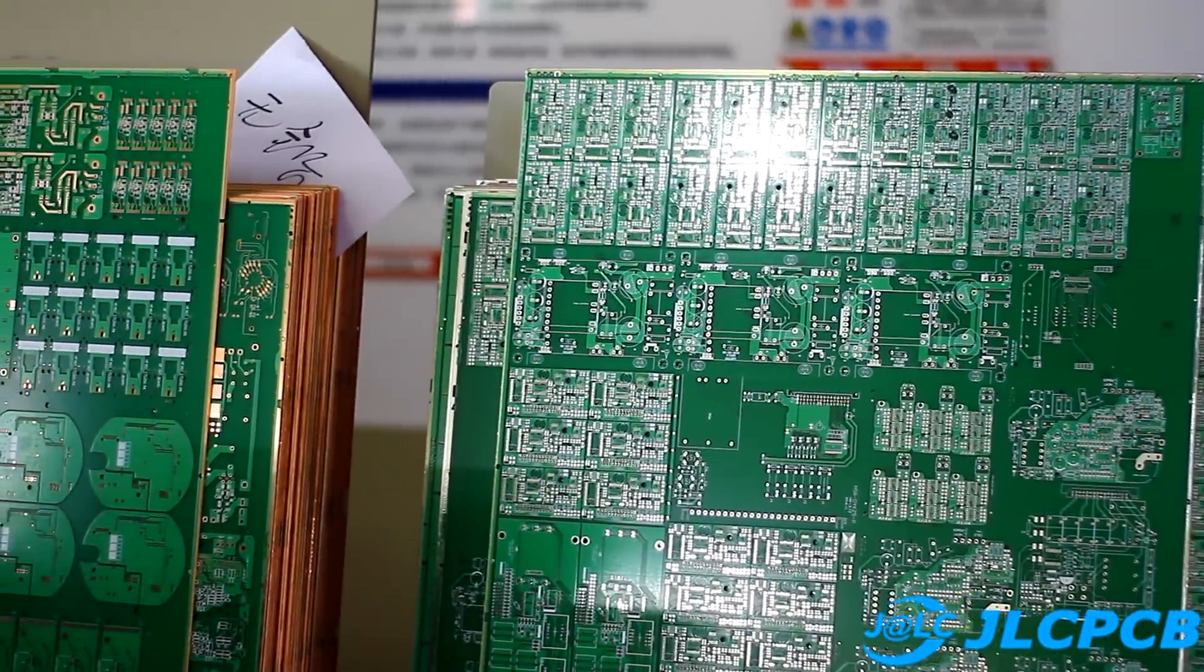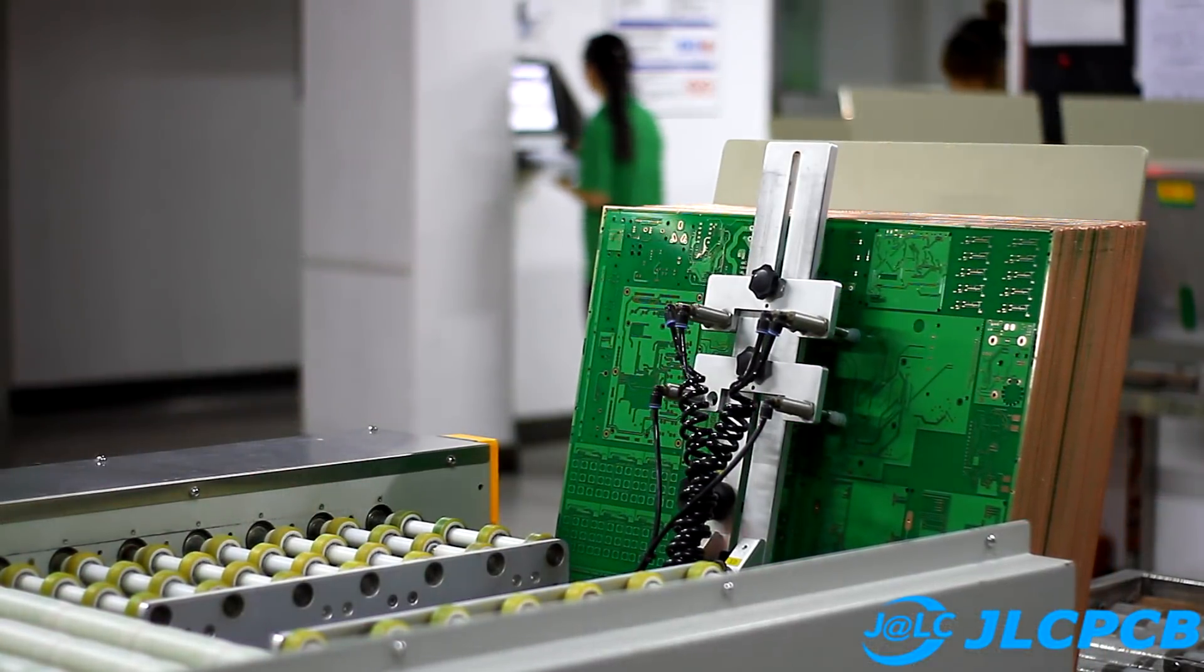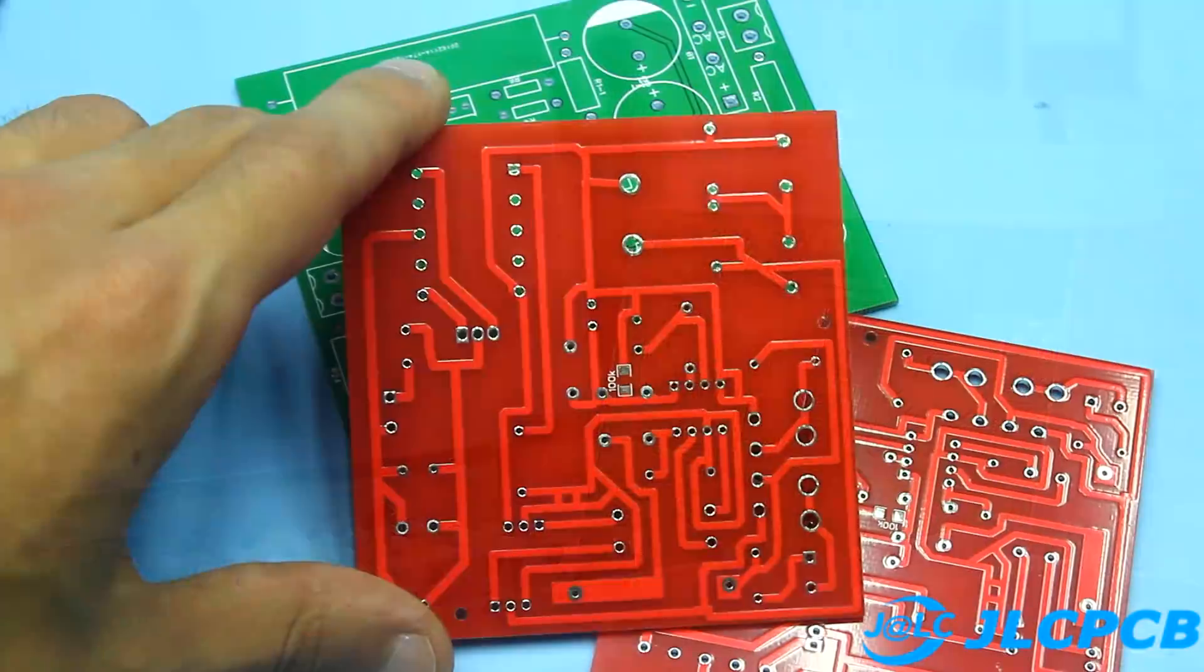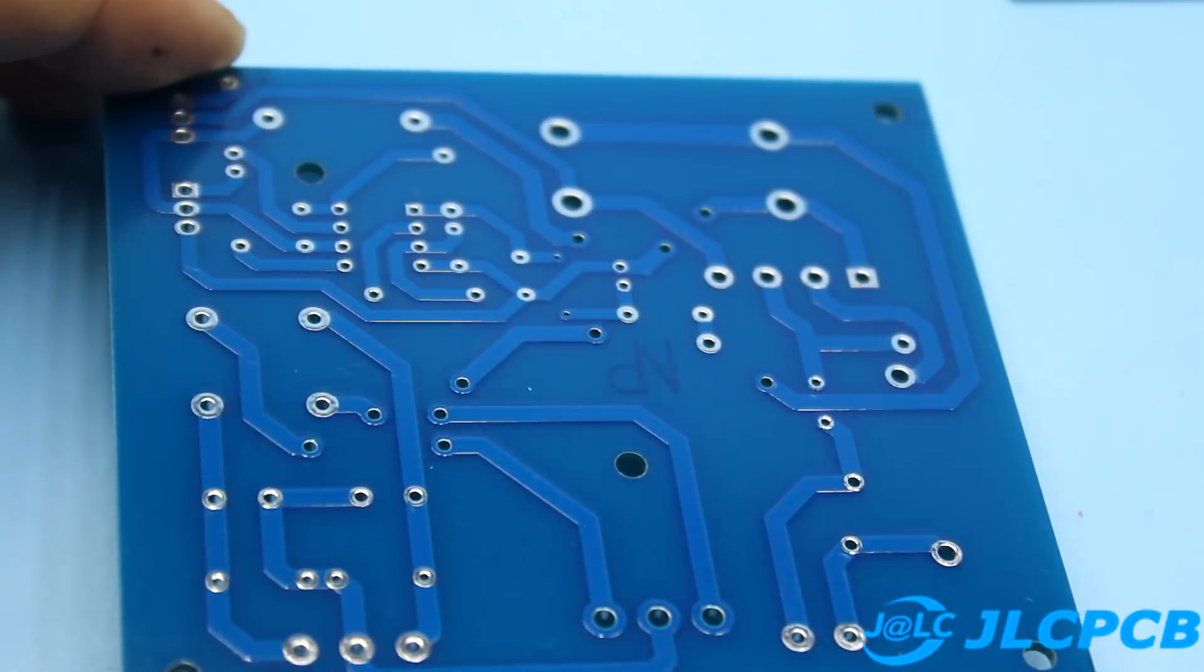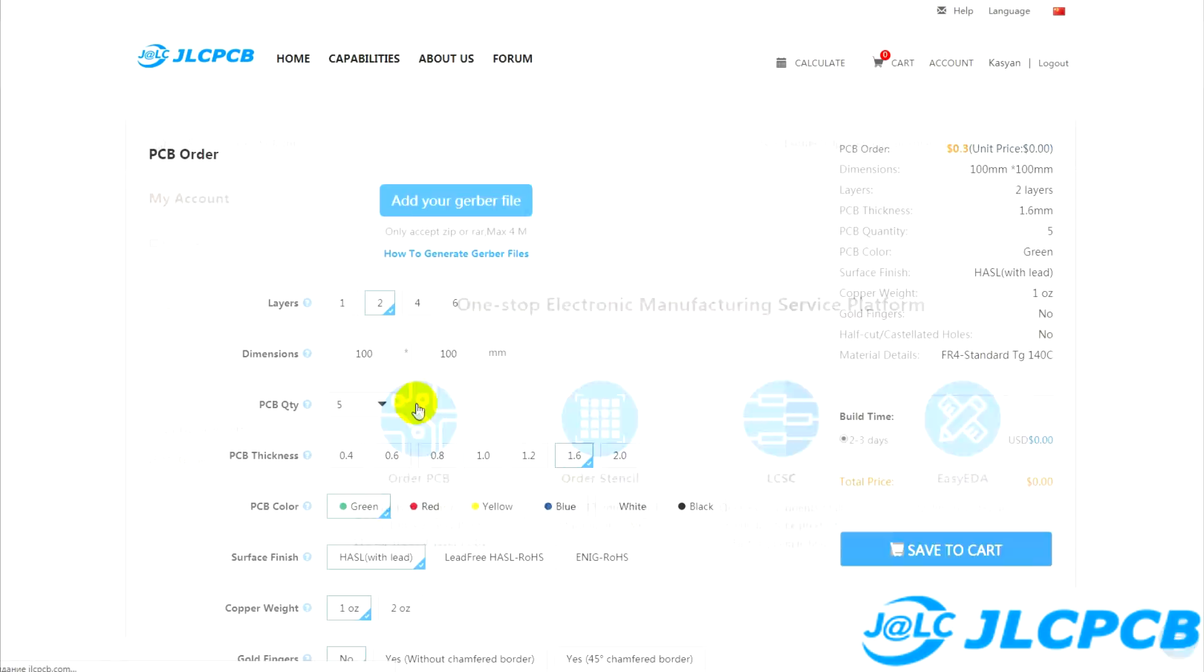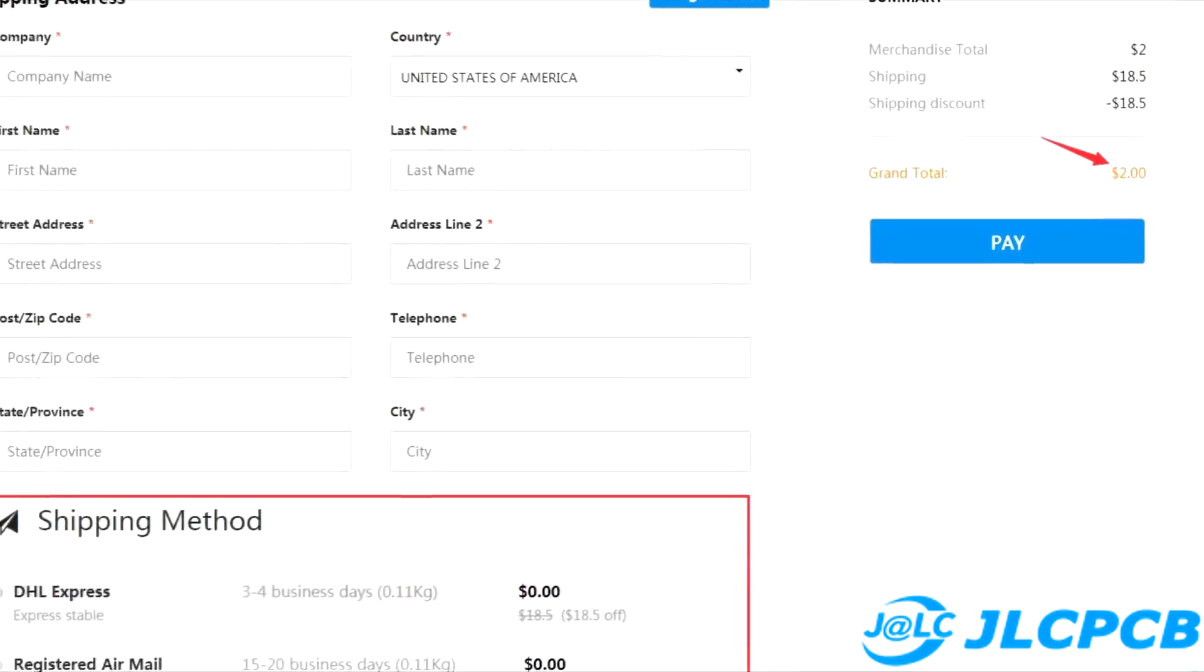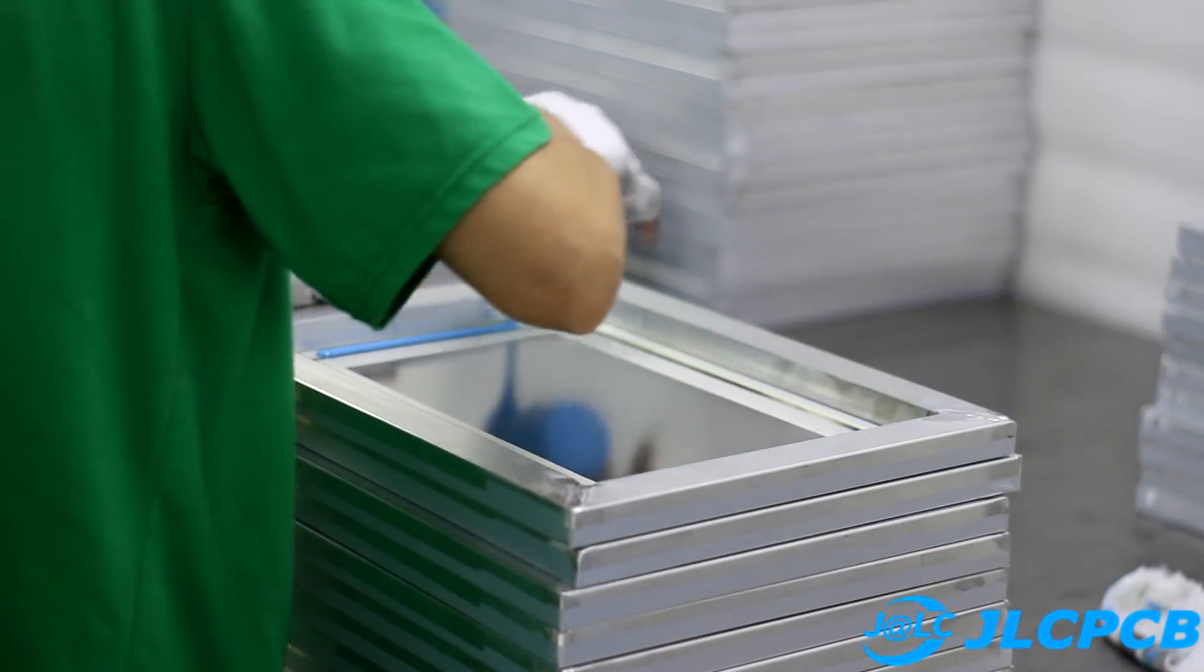The printed circuit board for this device can be ordered from the JLCPCB factory. I have several boards for similar units manufactured at the JLC factory. I think no need to tell you about the quality of the performance. Everything is clear. Anyone can order boards simply by downloading the original Gerber file. The cost of the board starts from $2 for 10 pieces. A link to the JLCPCB website can be found in the description.